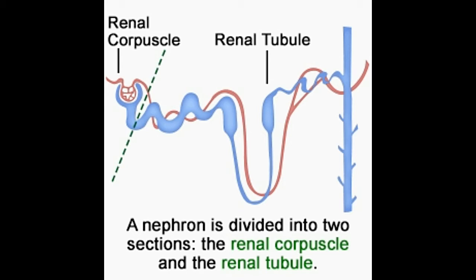The human kidney contains more than one million nephrons. Numbers as low as 800,000 are still considered healthy, and up to 1.5 million may be present.